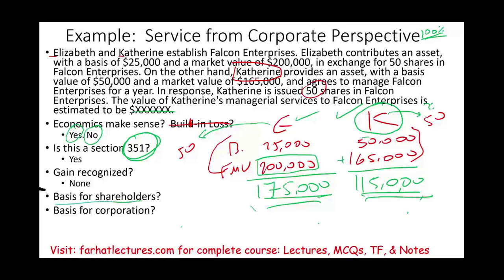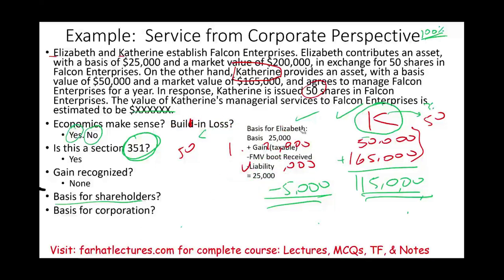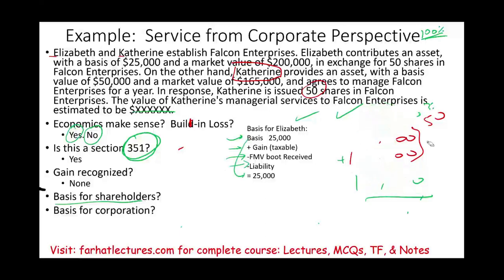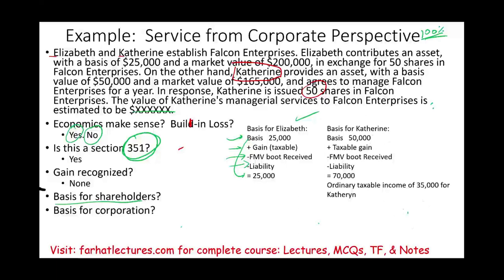What is the basis for the shareholders? For Elizabeth: adjusted basis of property contributed ($25,000) plus any recognized gain (none) plus taxable services (none) minus boot received (none) minus liabilities (none) — so Elizabeth's basis is $25,000. For Catherine: adjusted basis of property contributed ($50,000) plus taxable gain from services ($35,000) minus fair value of boot received (none) minus liabilities (none) — so Catherine's basis is $85,000. Catherine also recognizes $35,000 of ordinary taxable income for the services provided.